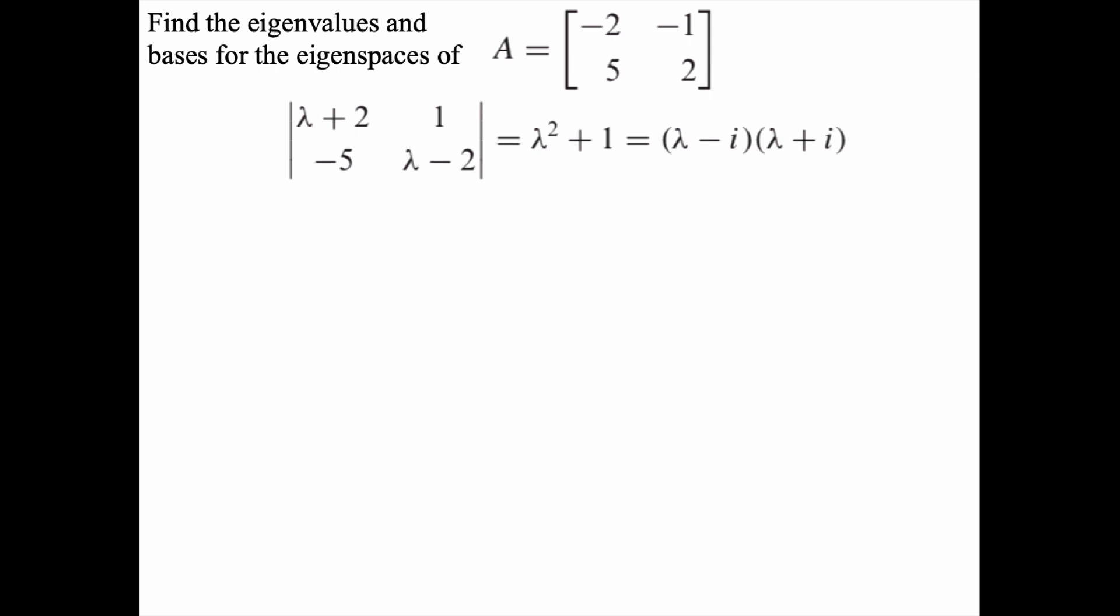If we set those expressions equal to 0, we have a characteristic equation. That reveals in this case that the eigenvalues are lambda equals i and lambda equals negative i. Those are complex conjugates, as the theorem said they should be.